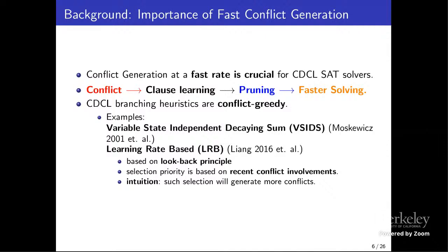CDCL branching heuristics are very conflict-greedy. State-of-the-art heuristics such as VSIDS (Variable State Independent Decaying Sum) and LRB (Learning Rate Based) are both based on the lookback principle and tend to prioritize selection of variables seen in recent conflicts. The intuition is that such selection will generate more conflicts in the future.